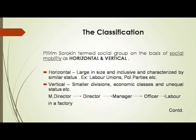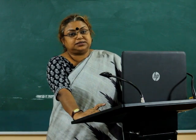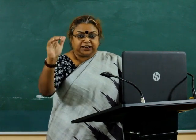The next classification is horizontal and vertical groups. Pitirim Sorokin terms social groups on the basis of social mobility as horizontal and vertical. Horizontal groups are large in size, inclusive, and characterized by similar status — for example, labor unions and political parties. In vertical groups there are smaller divisions, economic classes, and unequal status — for example, in a factory: managing director, director, manager, senior officer, sub-staff, and laborers.